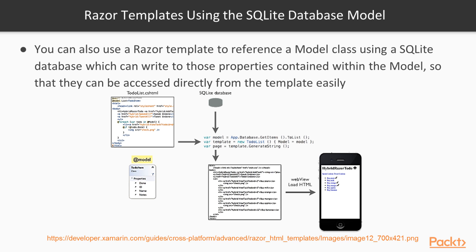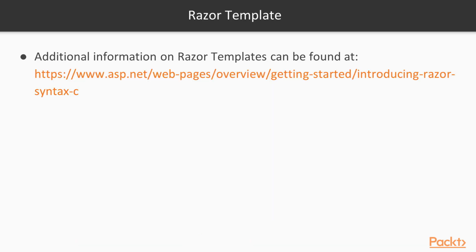You can also use a Razor template to reference a model class using the @model directive to communicate with a SQLite database. You can then write to those properties contained within the model and display the information within your template. As you can see here, the code references the model, converts it to a list, references the template by the name of the Razor file, assigns the model, and calls the GenerateString method that generates the information for the template, which then gets rendered within the web view on the device.